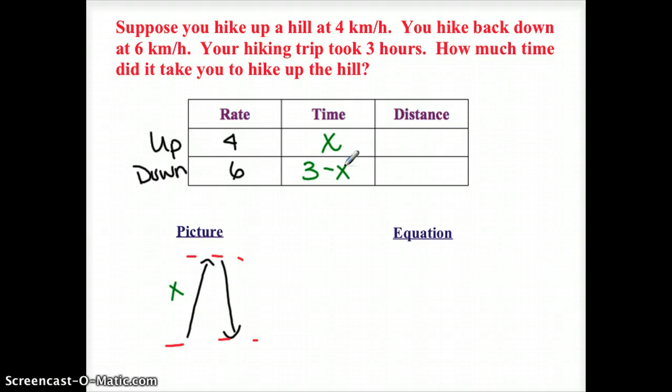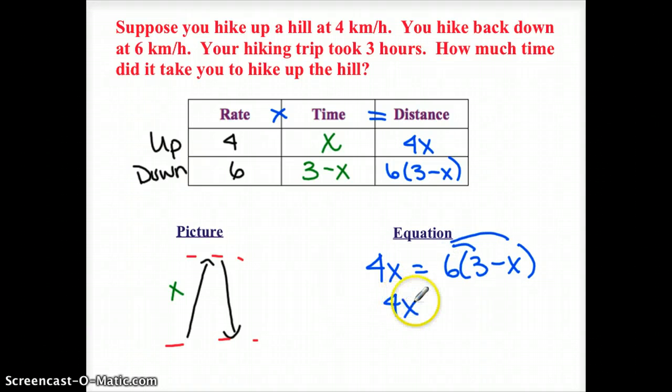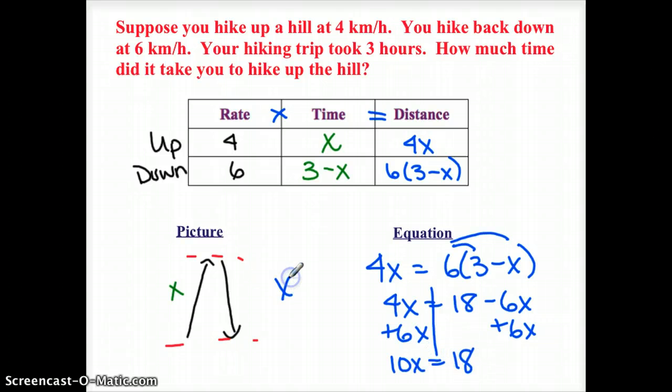Okay. To get our distance, I'm going to multiply again, because remember rate times time equals distance. So our distance uphill is 4X. Our distance downhill is 6 times the quantity 3 minus X. And I'm going to set up an equation that says 4X equals 6 times the quantity 3 minus X. Again, I'm probably going to use distributive property to say 4X equals 18 minus 6X. Okay. Add 6X to both sides. I'm going to get 10X equals 18.